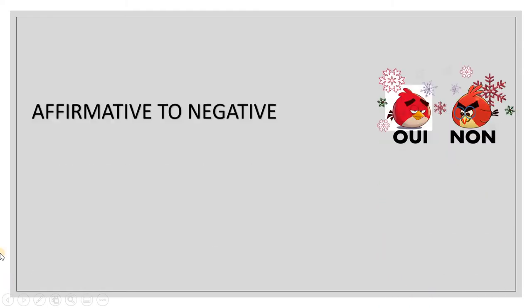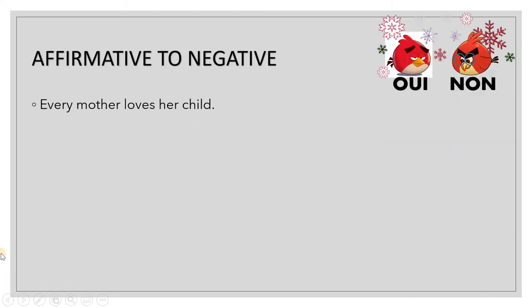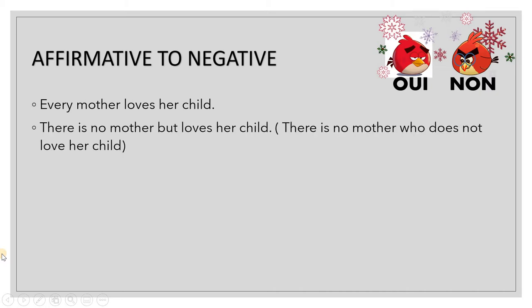Let us look at other kinds of examples — affirmative to negative. 'Every mother loves a child' becomes 'There is no mother but loves her child.' This seems a little unconventional, but it is the correct form, which actually means 'there is no mother who does not love her child.' We can write it both ways, but this is technically the most correct one.